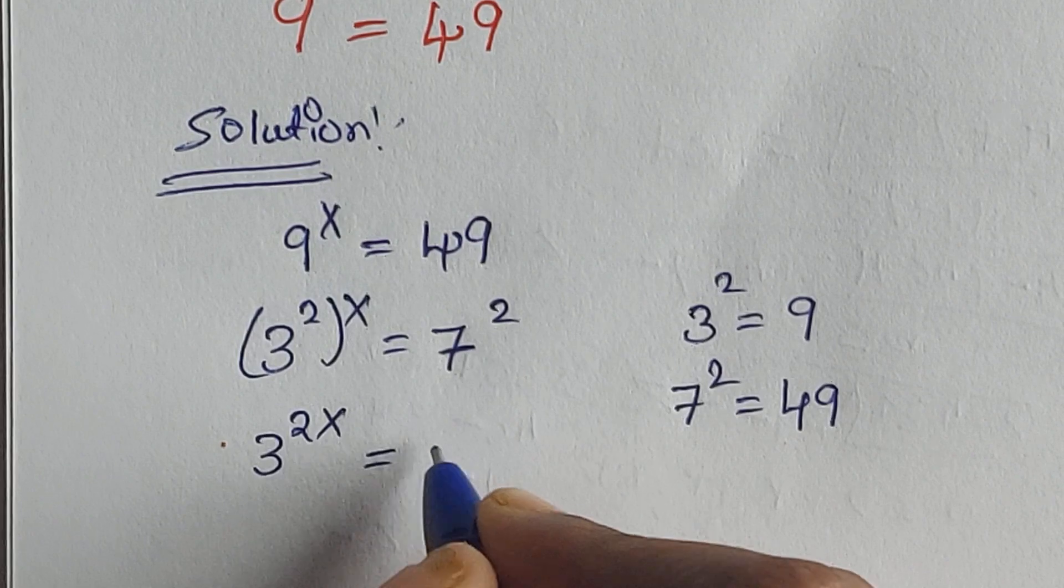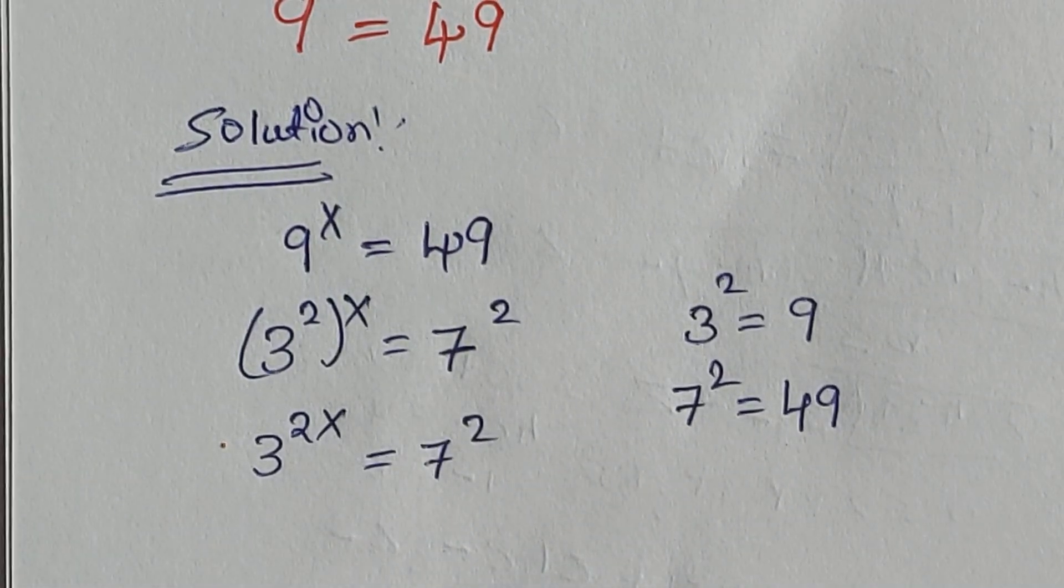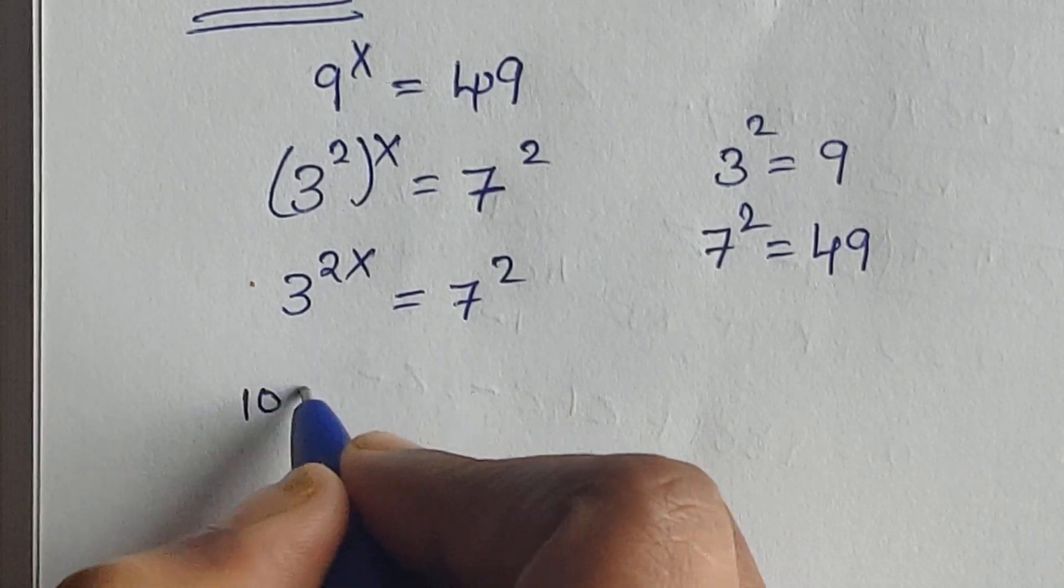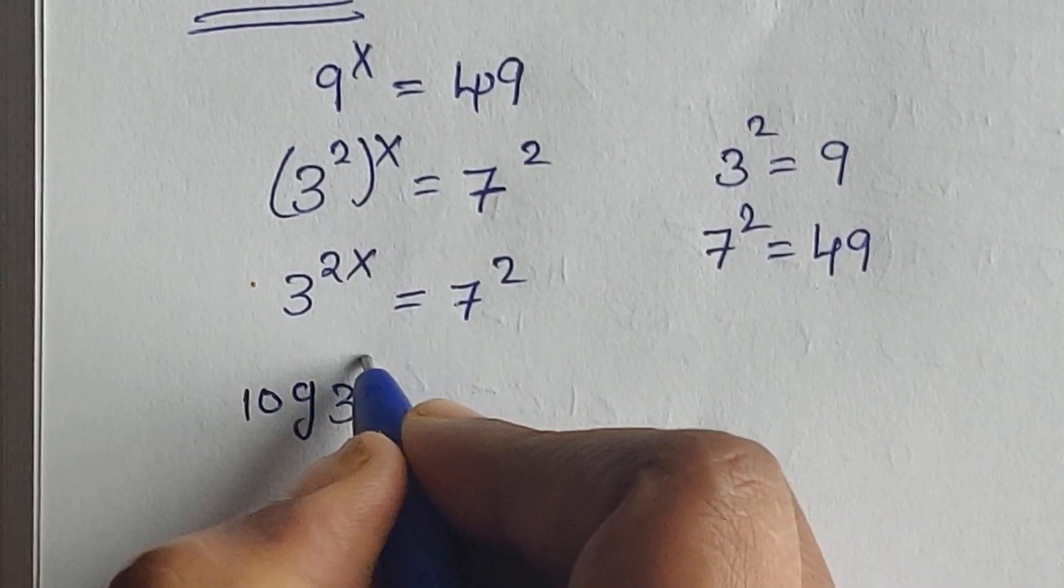So now we can apply log on both sides. Log 3 to the power of 2x equals log 7 squared.